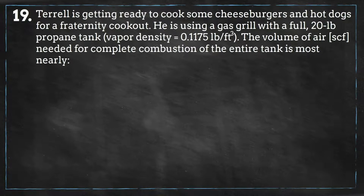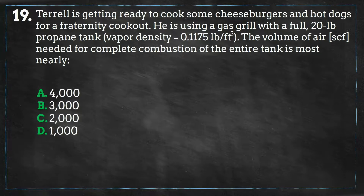Terrell is getting ready to cook some cheeseburgers and hot dogs for a fraternity cookout. He uses a gas grill with a full 20-pound propane tank. The volume of air needed for complete combustion of the entire tank is most nearly: A) 4000, B) 3000, C) 2000, or D) 1000. Pause the video and give yourself 5 minutes to solve the problem.